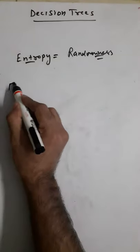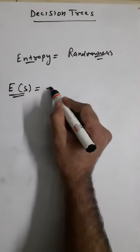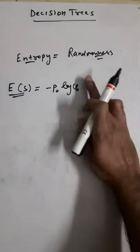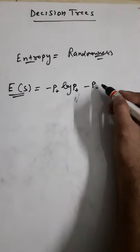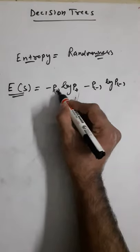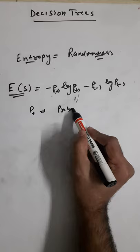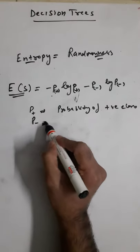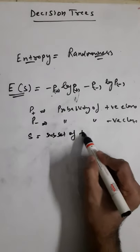Entropy is calculated based on a formula: Entropy(S) = −P(positive) · log P(positive) − P(negative) · log P(negative), where S represents the subset of our training examples, P(positive) is the probability of the positive class, and P(negative) is the probability of the negative class.